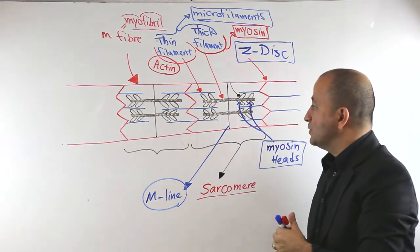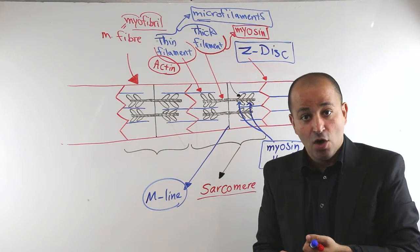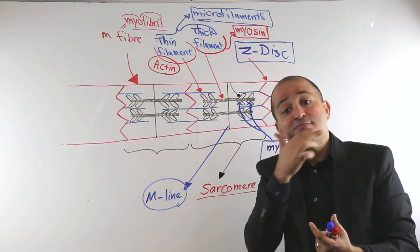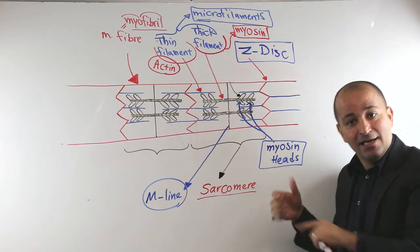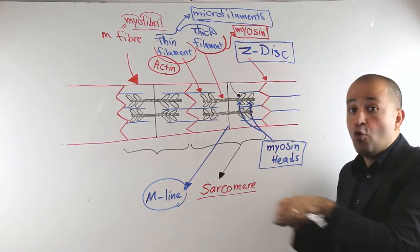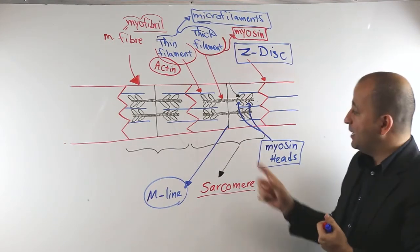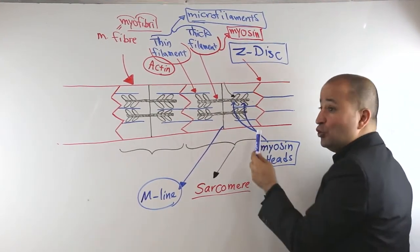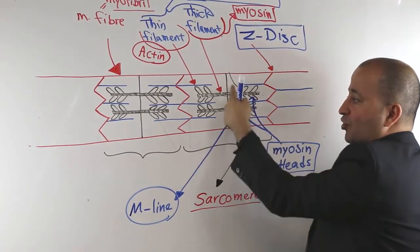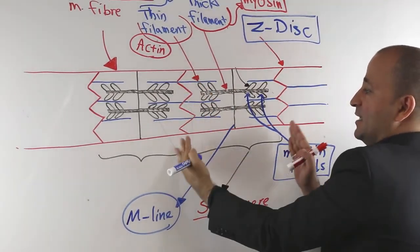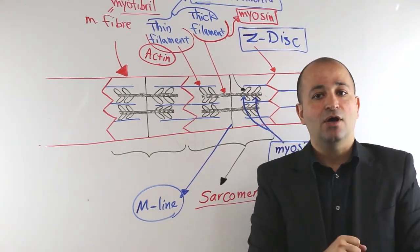So in exams they may ask about the structure: what is the M line, what is the sarcomere, what is the Z disc, what are thin and thick filaments, and who is responsible for contraction. The answer: the movements of myosin heads pull the actins towards the center of the sarcomere. The Z discs get closer together, the sarcomere becomes shorter, and the whole muscle becomes shorter.